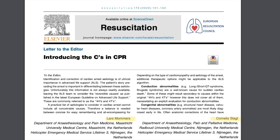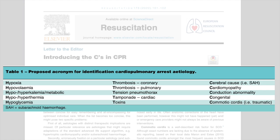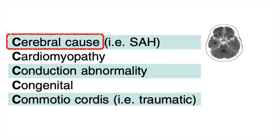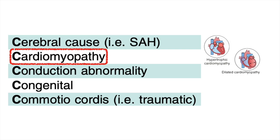That brings us to the C's, invented by doctors Momerj and Slacht from the Netherlands. They've taken the H's and T's and added five new C's. The first C is cerebral causes — especially acute subarachnoid hemorrhage, which is known to present with serious ECG abnormalities and can cause cardiac arrest with non-shockable and even shockable rhythms. Cardiomyopathy is listed as potentially infectious, dilated, or hypertrophic — capturing some structural causes and acute infectious causes like myocarditis. Myocarditis isn't rapidly reversible, but with time it is reversible, so considering this might lead you to consider the patient as a candidate for extracorporeal therapy — ECMO — or if you're pre-hospital, to take the patient to a center with ECMO capability.